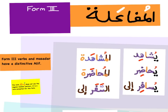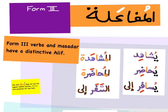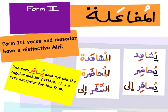Form 3 verbs and their Mazdar have a distinctive Alif. The pattern is Mufa'ala. For example: يُشاهِد (he watches) → المشاهدة (Al-Mushahedah); يُحاضِر (he lectures) → المحاضرة (Al-Muhadra — lecturing). Note that يُسافِر (he travels) does not take the regular Mufa'ala form — its Mazdar is السفر (Al-Safar), making it a rare exception for this form.